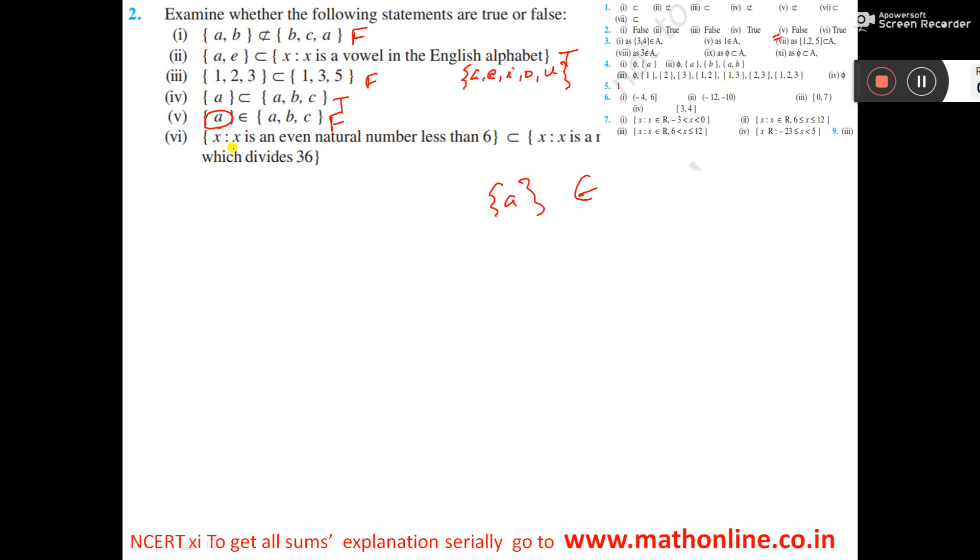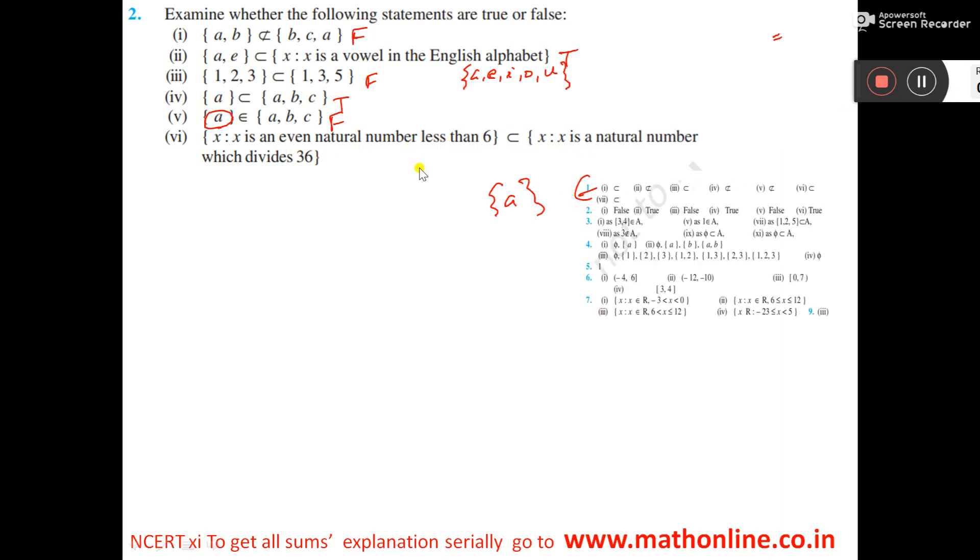Now number 6 you see, X is an even natural number less than 6. X is a, what is it? See here, X is an even natural number less than 6. X is a natural number which is divisible by 6. Sorry, which divides 6.